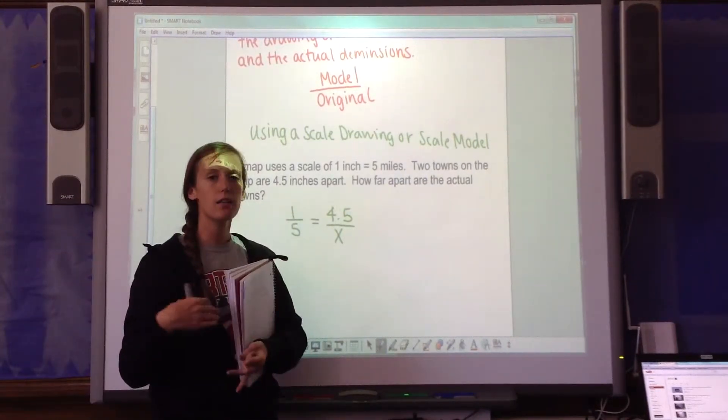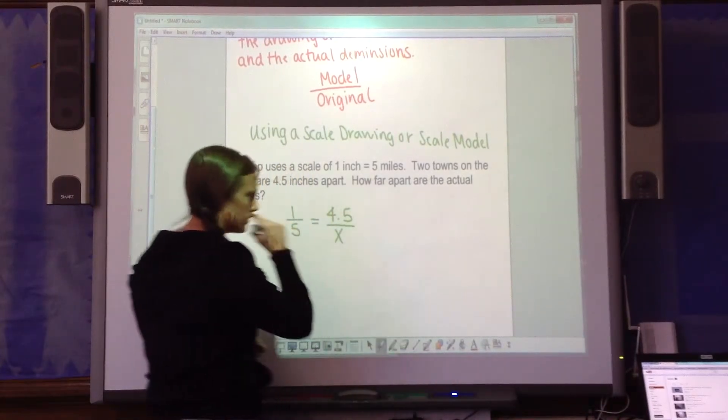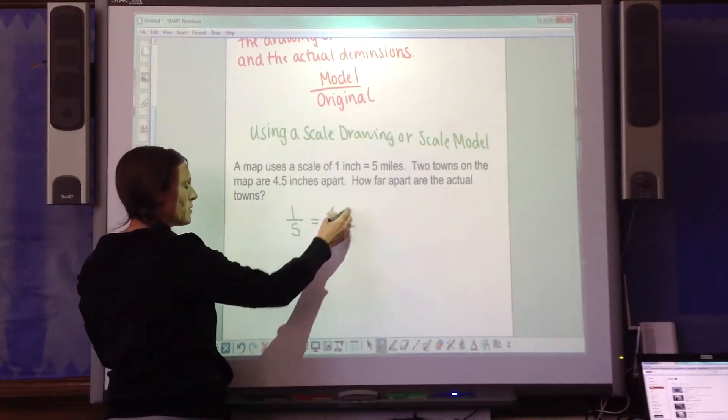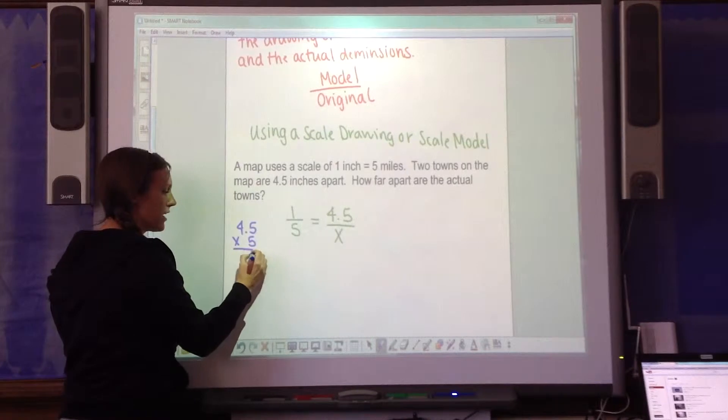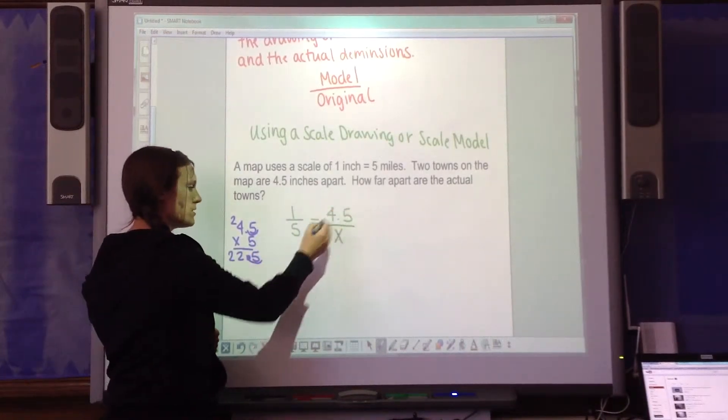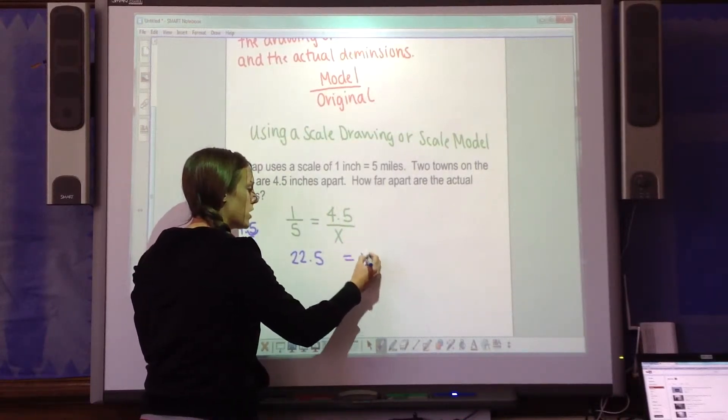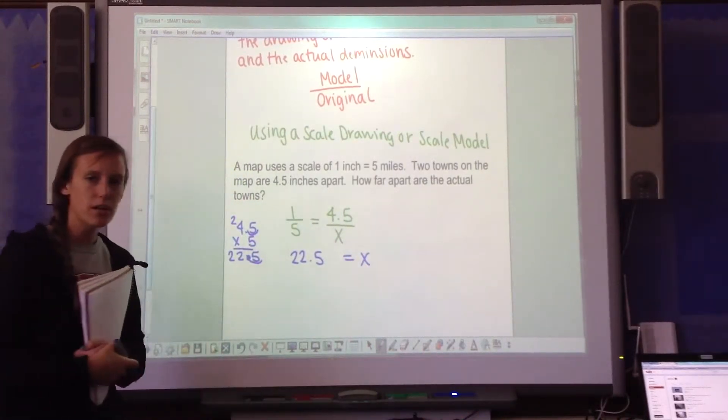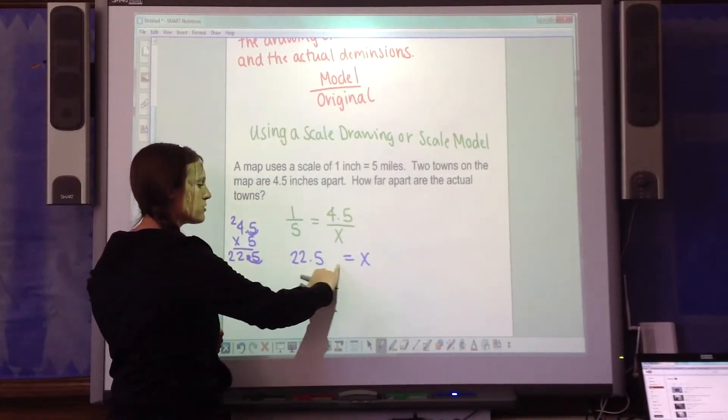You could use mental math. You could use another method. You could use cross multiply. I'm going to use cross multiply. So I'm going to multiply 4.5 times 5. 5 times 5 is 25. 5 times 4 is 20, plus 2 is 22. I'm going to adjust the decimal and I get 22.5. So this times this is 22.5. 1 times x is 1x or just x. x is already by itself. So I don't have to do any more math.